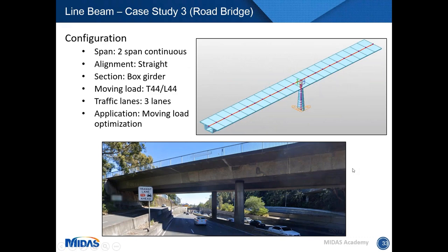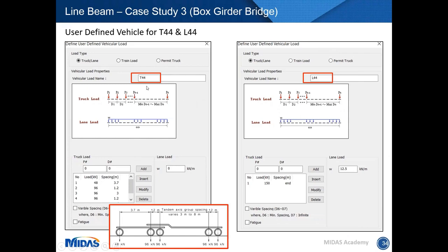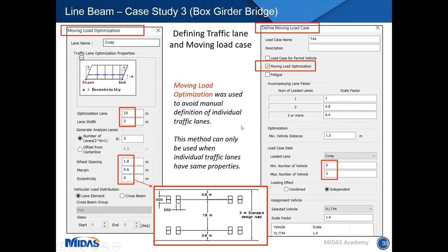The next case study is a road bridge — a two-span continuous bridge being assessed for vehicles T44 and L44. Since these vehicles are not currently predefined in Midas, I used the user-defined truck lane function to define T44 and L44 loads. For the moving load case, I used moving load optimization — which can also be used for a 2D line beam model, not just grillage.